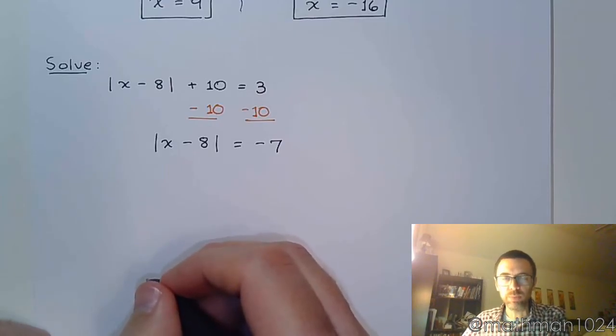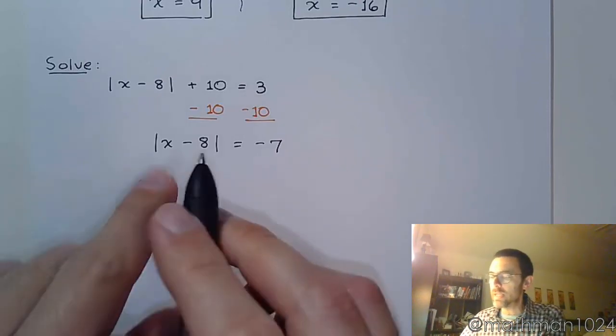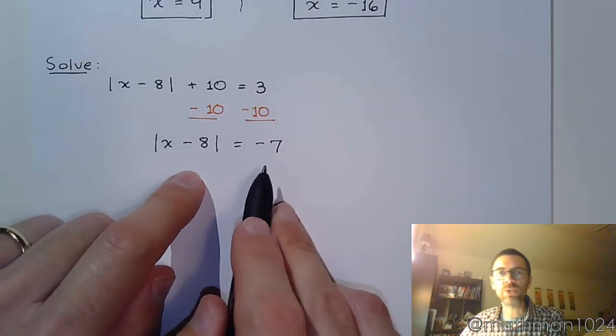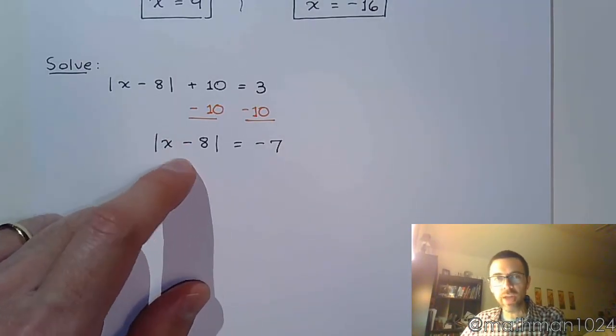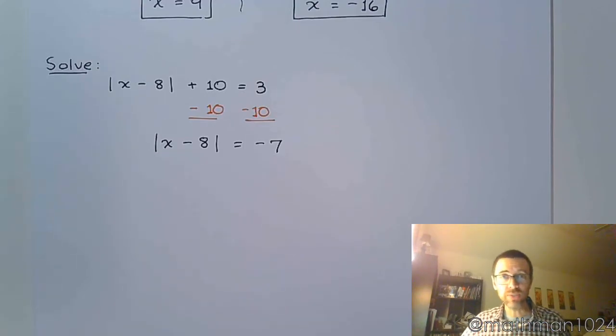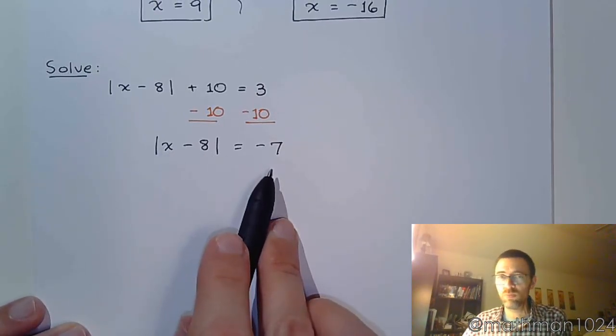So we have the absolute value of x minus 8 is equal to negative 7. Well, now we run into a bit of a problem. Because if you think back to those statements that we said at the very beginning of this section about absolute value equations, the absolute value has to equal something that's non-negative. So when you think about the absolute value, it always returns a positive number or it can give you a value that's zero. Think about the absolute value of zero - that's just going to be zero, right? But when can an absolute value equal a negative number?